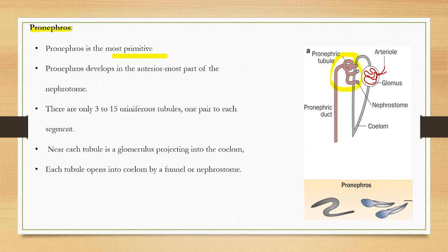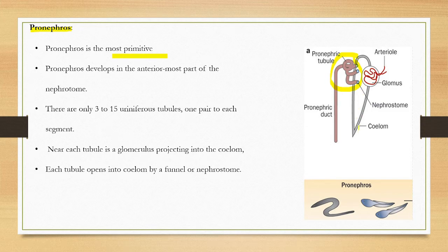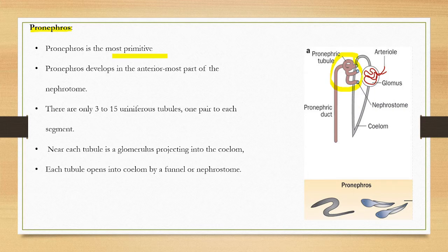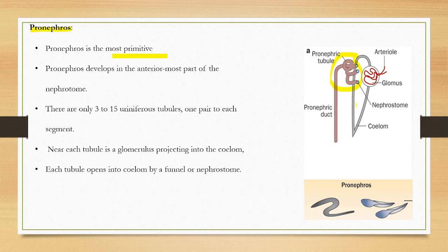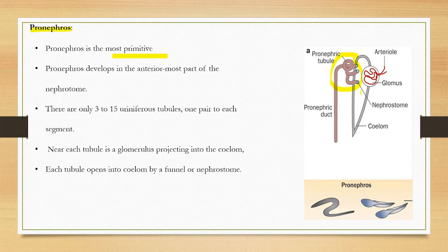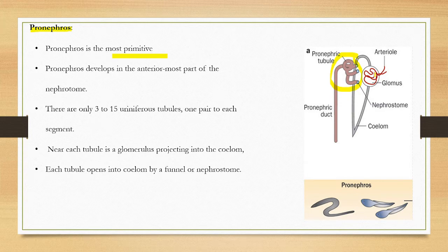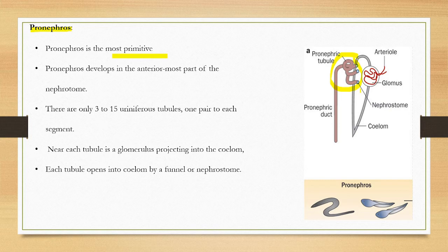The peculiarity is each tubule has a glomerulus projecting into the coelom. This cavity is called coelom. So this glomerulus opens into the coelom. This is called nephrostome. The glomerulus allows waste material to be collected from the coelom.